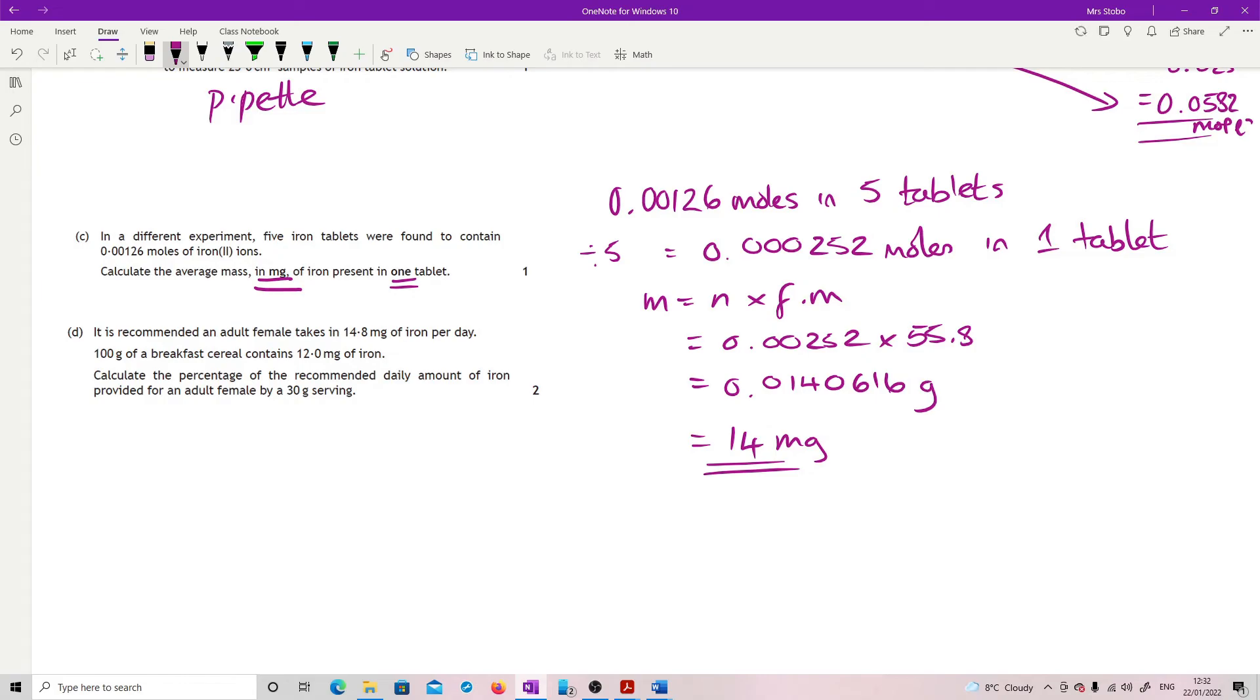It is recommended an adult female takes in 14.8 milligrams of iron per day. 100 grams of a breakfast cereal contains 12 milligrams. Calculate the percentage of the recommended daily amount of iron provided for an adult female by a 30 grams serving. So 100 grams gives you 12 milligrams. 30 grams, therefore, 30 divided by 100 times by 12 means that for each 30 grams I'm getting 3.6 milligrams. So 3.6 divided by what I should get in total, 14.8, times it by 100 means that this is giving 24.3 or 24%. Two marks. I think it's not too bad for two marks. As long as you keep everything clear, it's pretty straightforward. And that's the question. Thank you.